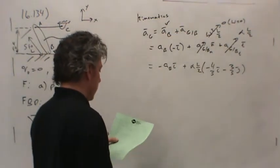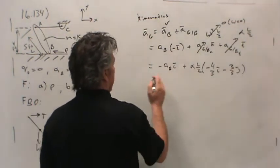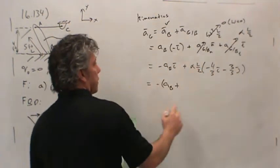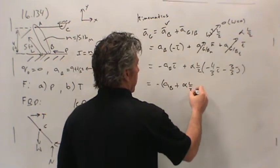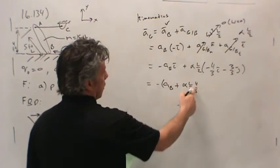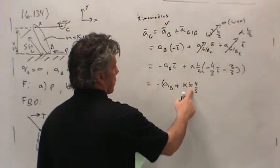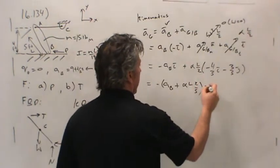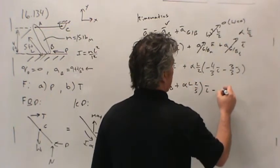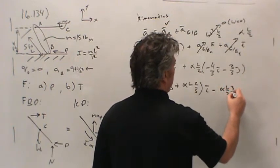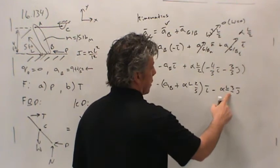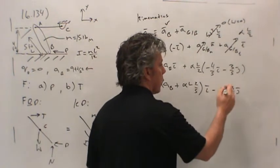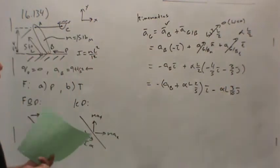Let's collect the I terms together: negative AB plus negative alpha L over 2 times 4 fifths. The 2 and 4 can be combined, giving 2 fifths. So I get negative quantity AB plus alpha L times 2 fifths. And then the J component is minus alpha L over 2 times 3 fifths, but 2 times 5 is 10, so that's negative 3 tenths alpha L in the J direction.